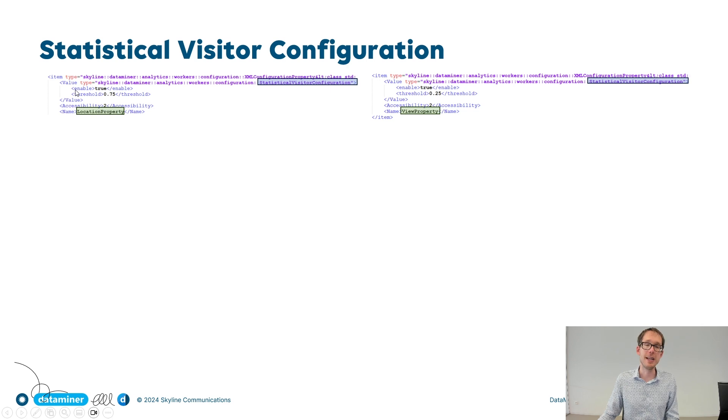You immediately recognize a few of the tags from other configurations. First, there's the enable tag. This allows you to switch on or off the specific grouping strategy. If you want to switch it off, simply put this through to false. You will also recognize the accessibility tag. This is something that appears in all of our configurations, and it's something that you can actually ignore. It has to do with backward compatibility. We've added it long ago, and it kind of remained there. So please just ignore that.